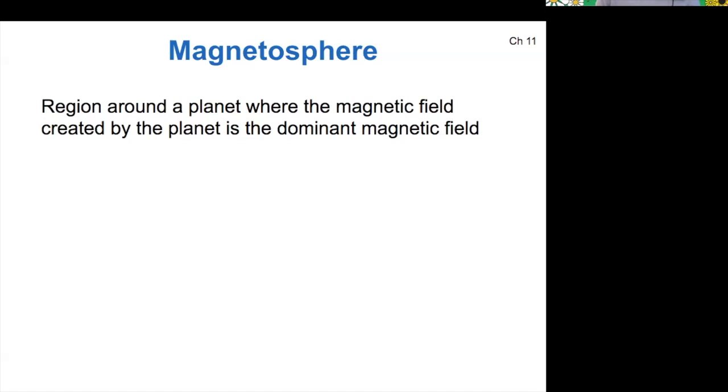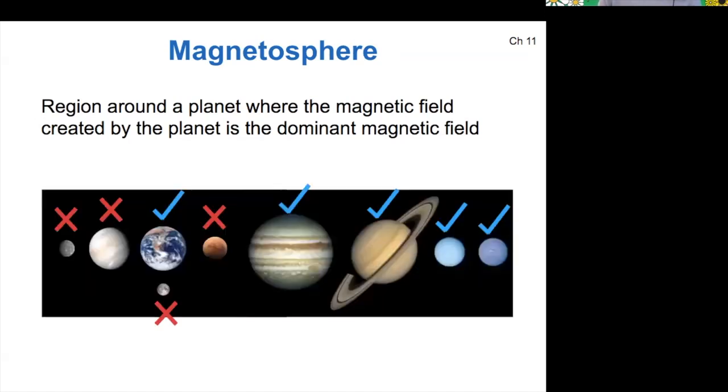Lots of different planets have magnetospheres. In the terrestrial worlds, Earth was unique for having a magnetosphere. Other planets have weak magnetic fields, but they do not dominate the space. All of the gas giants have magnetic fields, so let's talk about those compared to Earth and where they come from.